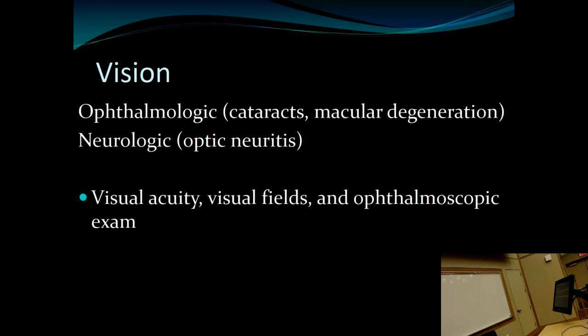Any cause of visual loss will affect walking and balance. In the elderly, cataracts and macular degeneration cause unsteadiness. Neurologic causes include optic neuritis from multiple sclerosis causing demyelination of the optic nerve and visual loss. As an important part of evaluation for someone unsteady on their feet, you should check visual acuity, examine the eyes for cataracts, and check visual fields.